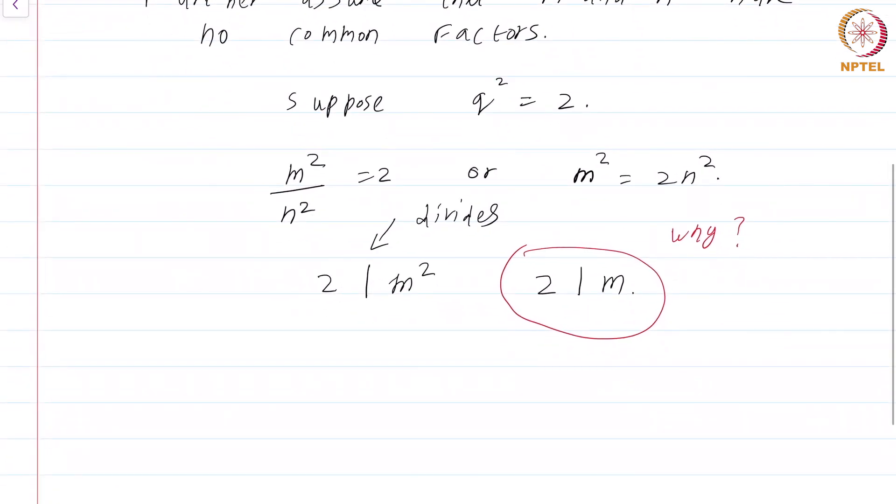But that means 4 divides m². Why is this the case? Because 2 divides m, therefore 4 must divide m².